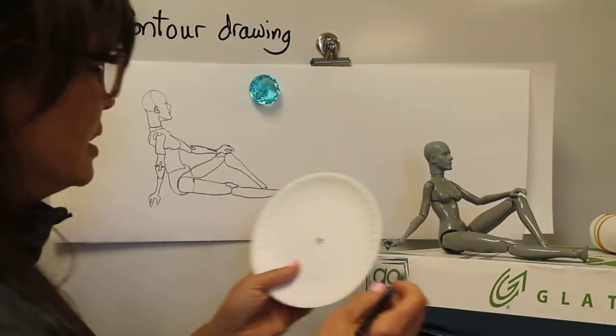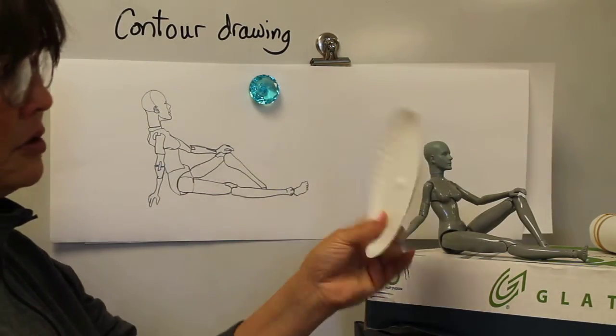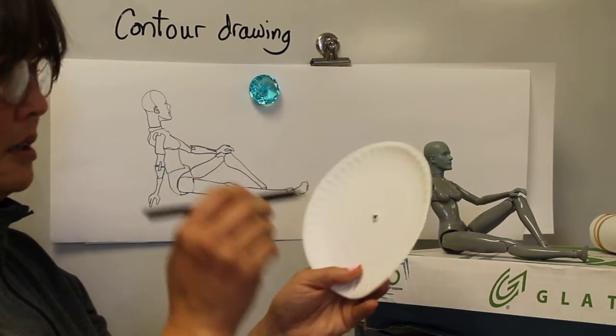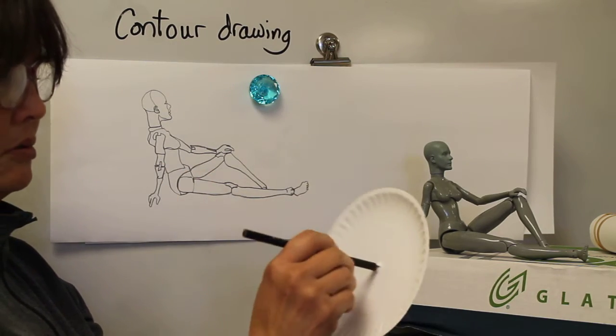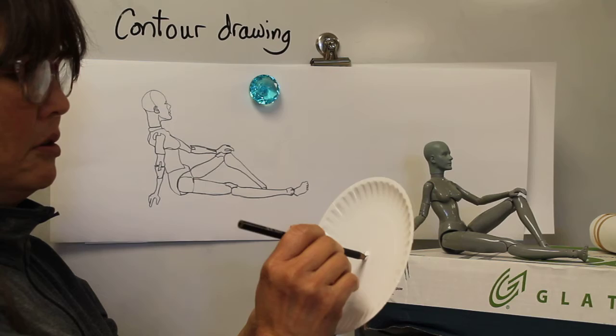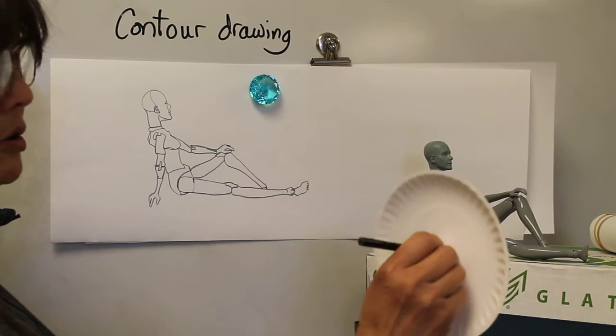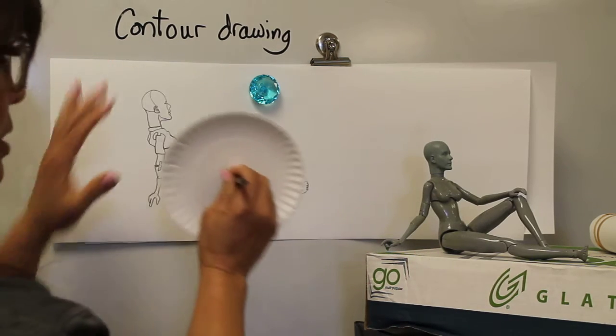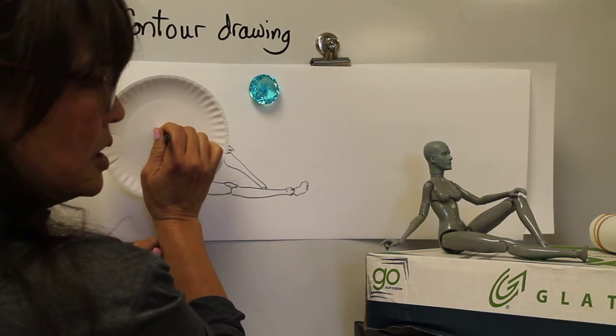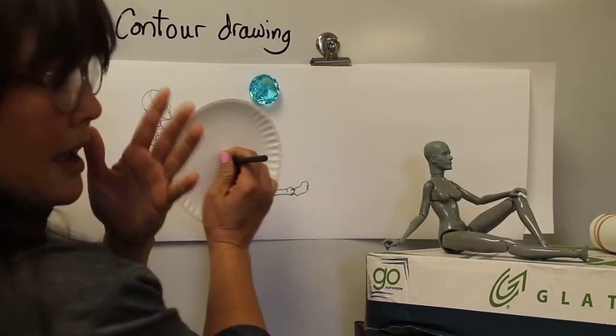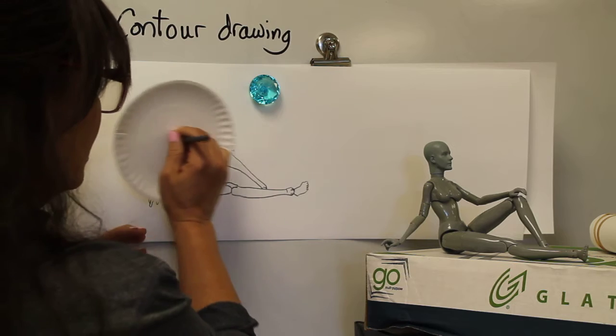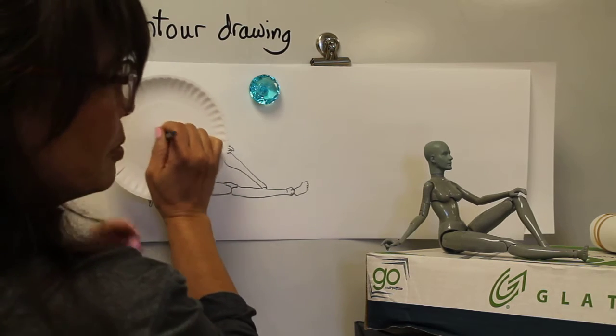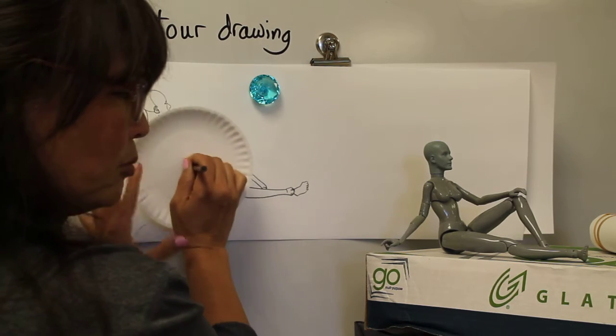I won't be doing a blind contour probably, but if you do want to make, you can get a paper plate and just jab your pencil, doesn't matter really which way, through. Make a hole in your paper plate. And this keeps you from, if you're doing a blind contour, it keeps you from cheating and looking at, because it's habit to look at your paper when you're drawing. This shields your paper so that you can't see what you're drawing.